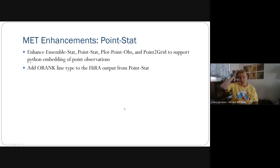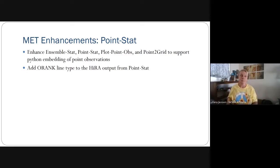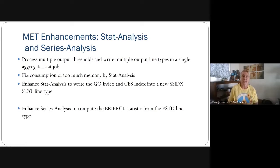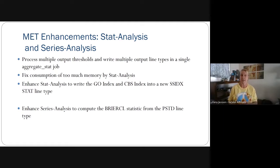We also added the O rank line type to the high-resolution analysis HIRA output for point stat. For stat analysis and series analysis, we added the ability to process multiple thresholds and write multiple output line types using a single aggregate stat job. This gives more filtering capability and more ways to stratify your data.